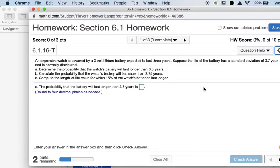Part A says to determine the probability that the watch's battery will last longer than 3.5 years. A tricky part of this problem is they're telling me the battery is expected to last 3 years. That is an expected value, or in other words, that's the mean.